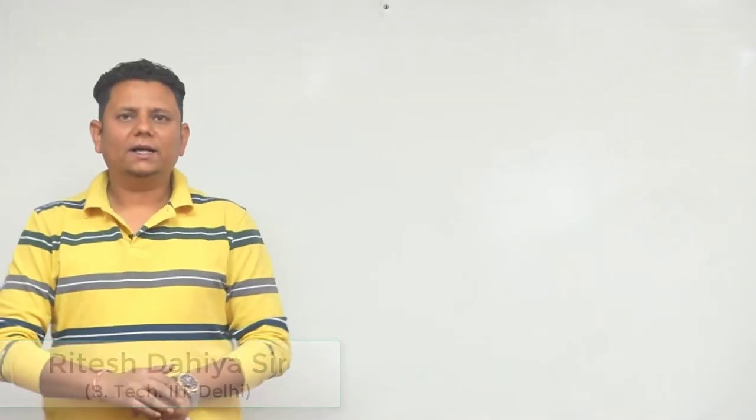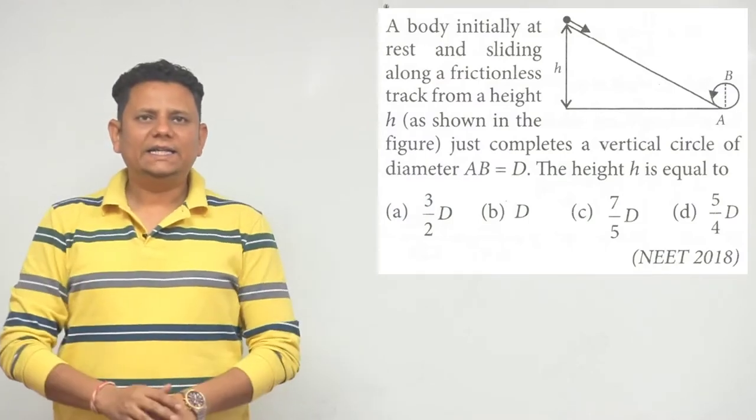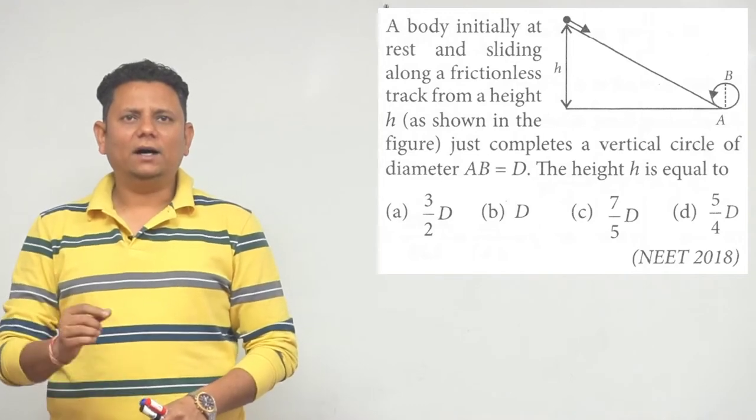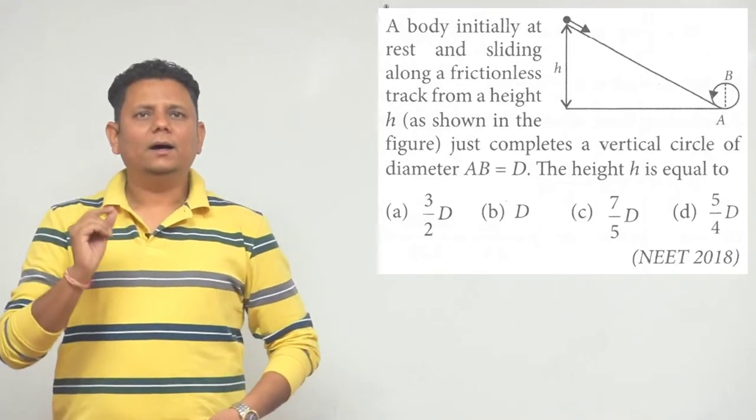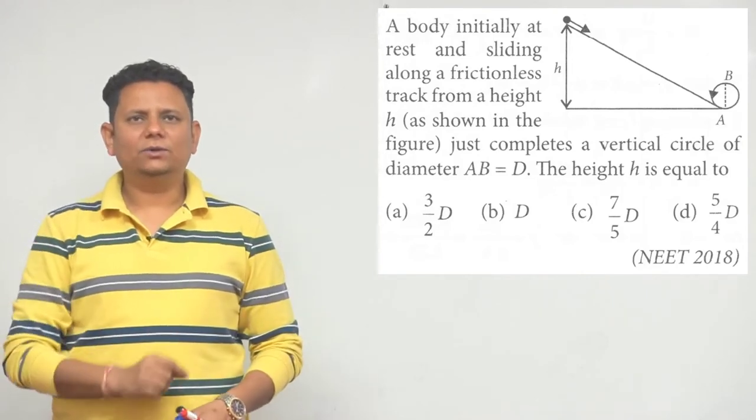Next question, question 2018, this is one of my favorite questions. It says a body initially at rest and sliding along a frictionless track from a height H as shown in the diagram just completes a vertical circle of diameter AB equals D.